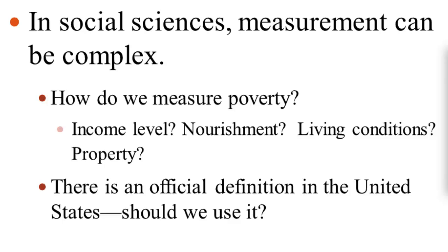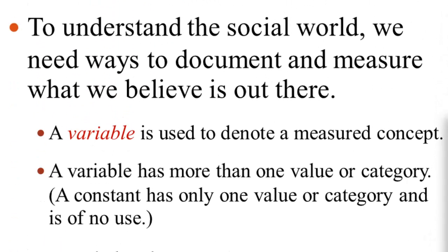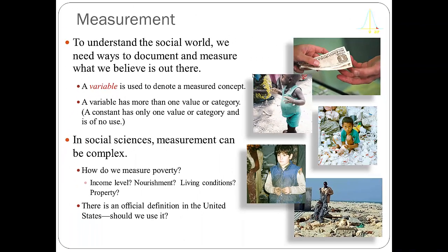What we need to do is create what's called a variable. A variable is something used to denote a measured concept, so the variable here we might call poverty. Poverty is not a constant — not everybody has the same level of poverty. A variable is something that can vary. So we develop the concept of poverty, define what it is and how to measure it, and then assume that people will have different levels of it along a continuum or spectrum.